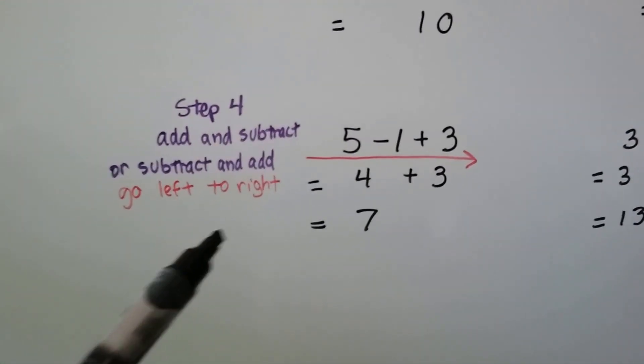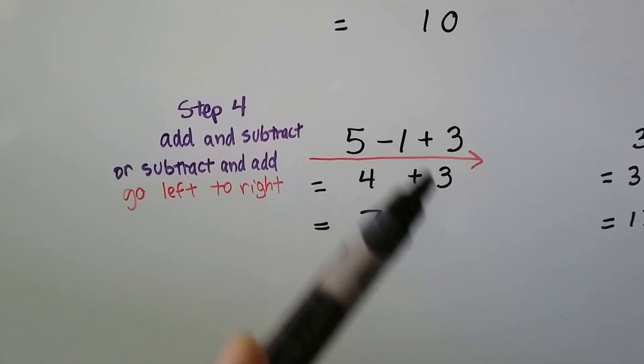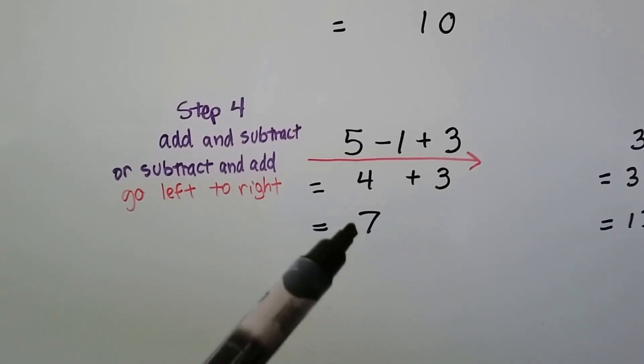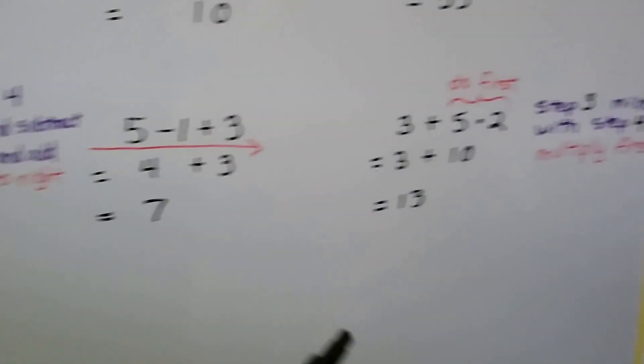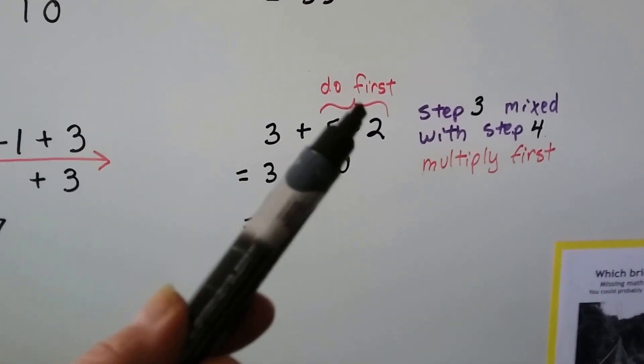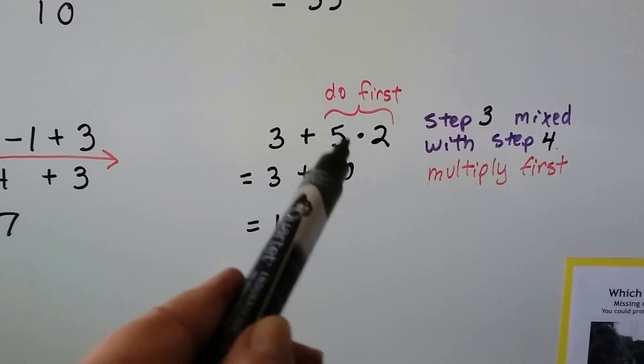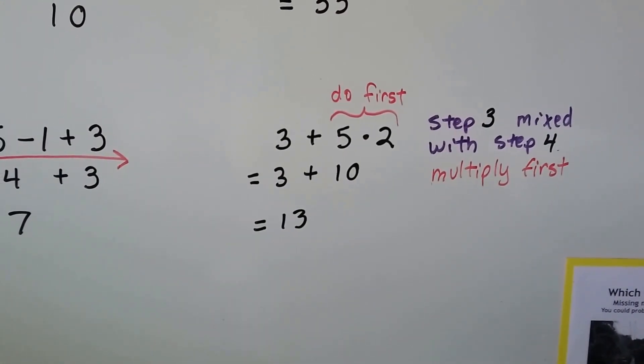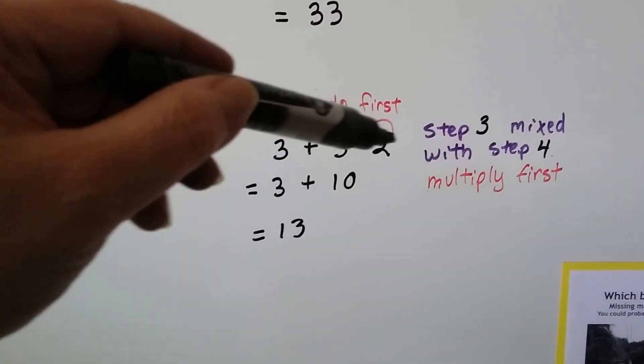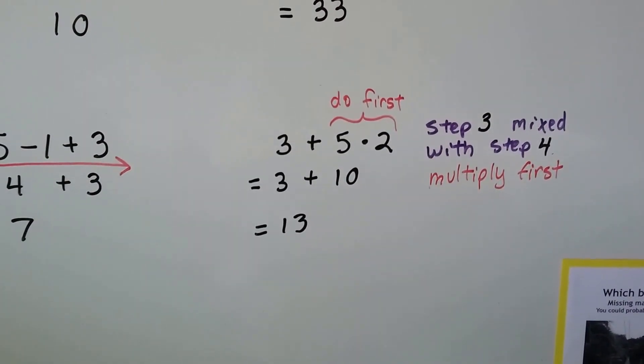This is all step 4. It's addition and subtraction or subtraction and addition. We just go left to right. We get a 4 plus 3, which is a 7. But when we mix step 3 with step 4 in our expression, now we have to do the multiplication first. So 5 times 2 is 10 plus 3 is 13. If we had gone straight across, we would get an 8 times 2, which is a 16. That's wrong.